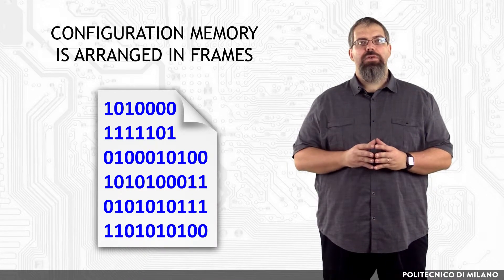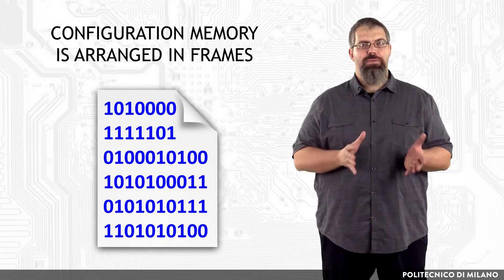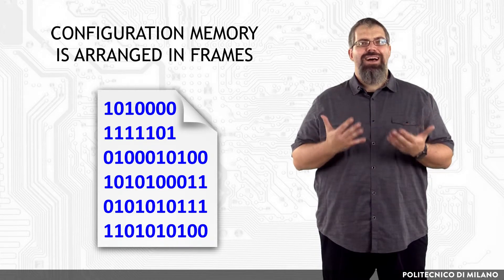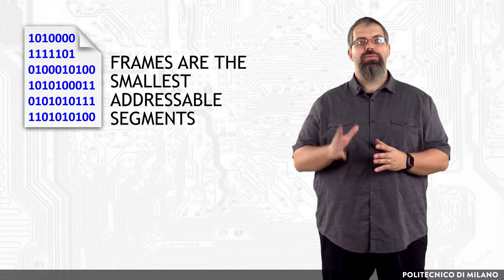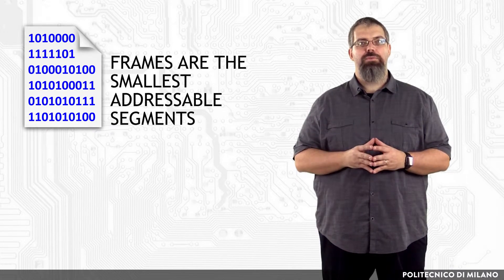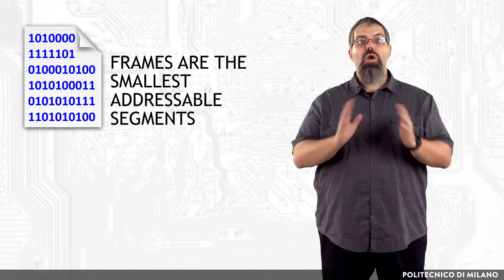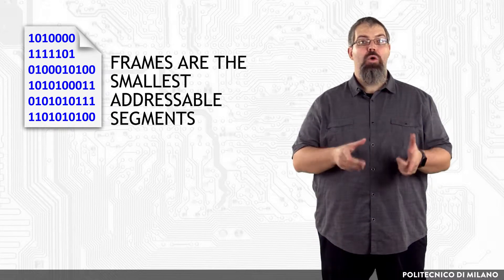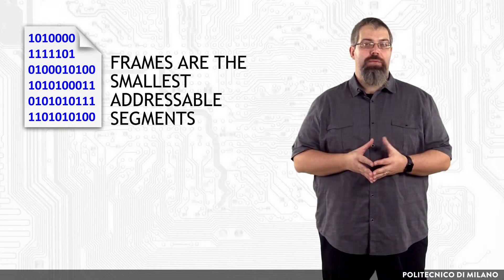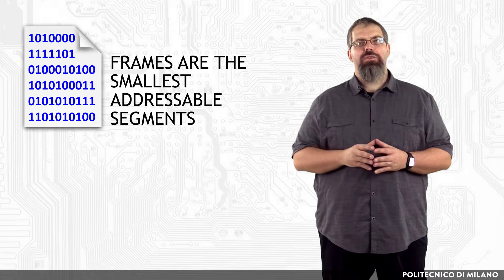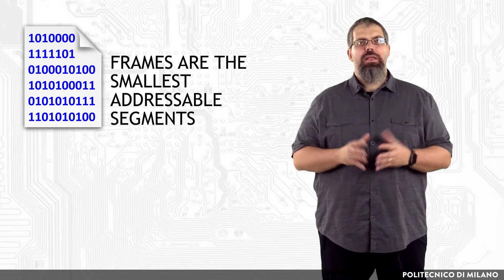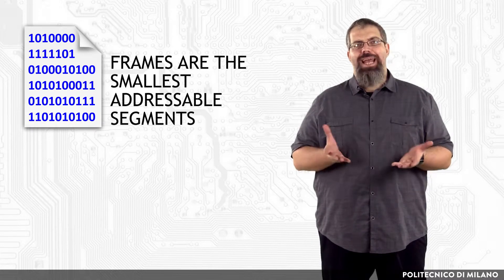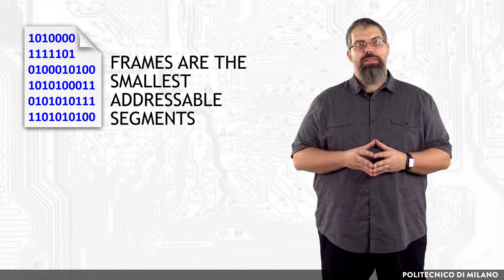FPGA configuration memory is arranged in frames that are tiled about the device. These frames are the smallest addressable segments of the FPGA configuration memory space, and all operations must therefore act upon whole configuration frames. Each frame consists of N 32-bit words.